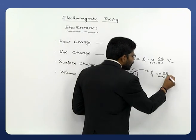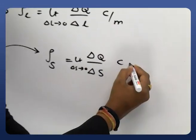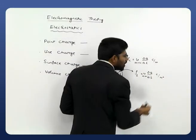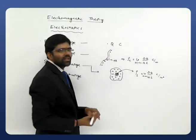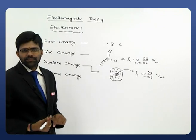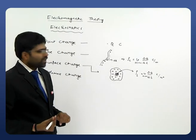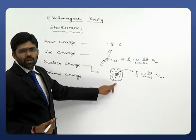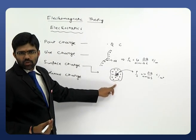Observe the units here: charge Q in Coulombs, surface area in meter squared. So the units of surface charge density are Coulombs per meter squared.